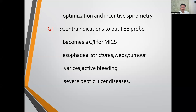Regarding the gastrointestinal system, any contraindication to placing a TEE probe becomes a contraindication for MICS, because TEE is mandatory for MICS. Conditions like esophageal stricture, webs, tumors, varices, and active bleeding can be contraindications to TEE and therefore MICS. Severe peptic ulcer disease should also be noted, as the probe can cause bleeding.